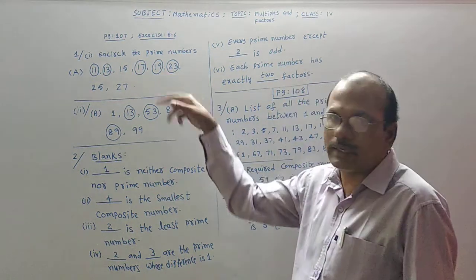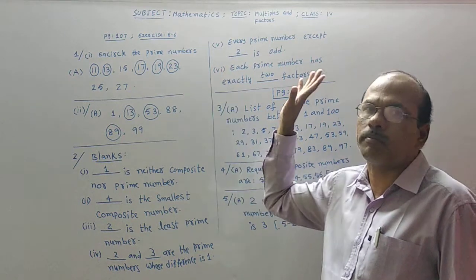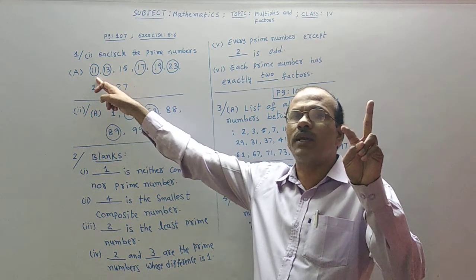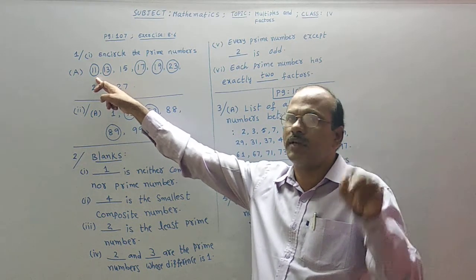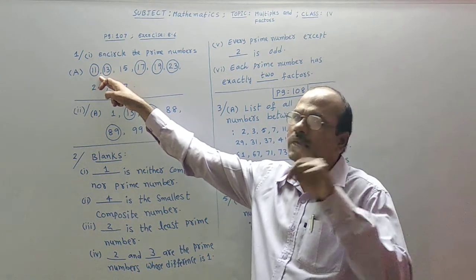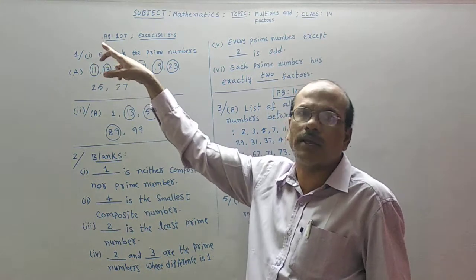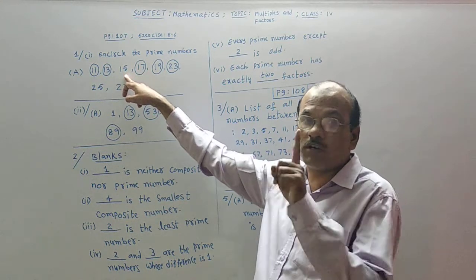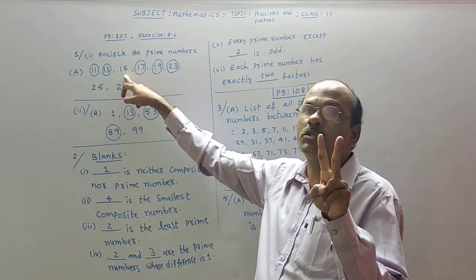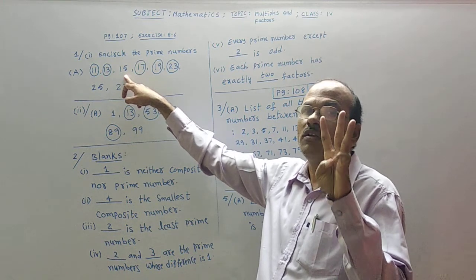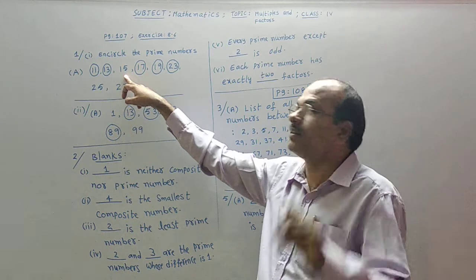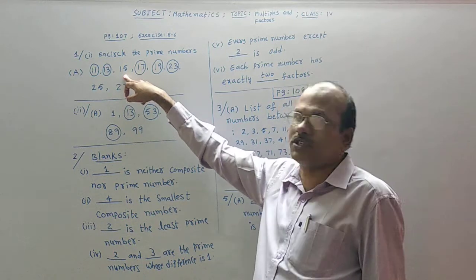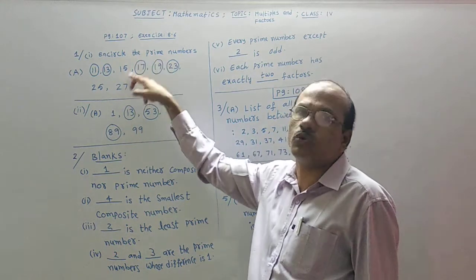Now we have to draw a circle around the prime numbers in the first question. Take 11: 11 is having only 2 factors — 1×11=11 and 11×1=11, only 2 factors. So 11 is a prime number and I have drawn a circle around it. Same way for 13. For 15, we cannot draw a circle because it has factors in the 1, 3, 5, and 15 times tables — 4 factors. So 15 is not a prime number but a composite number. We should draw circles only around prime numbers.